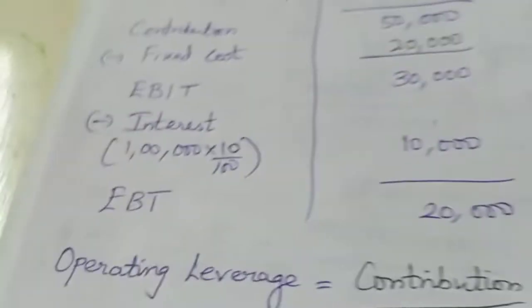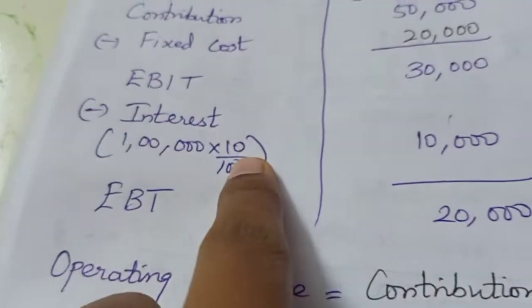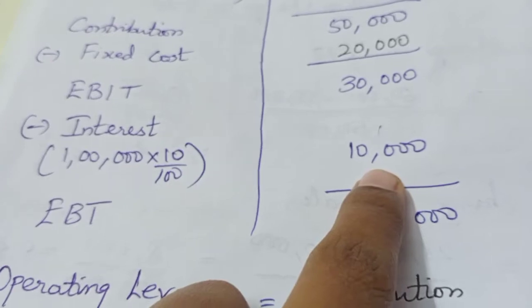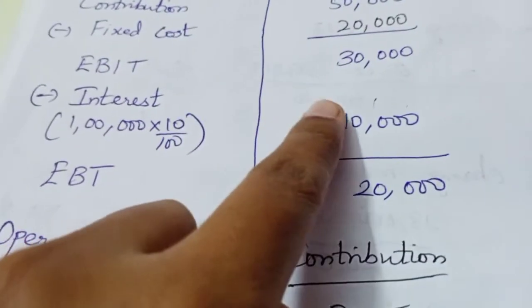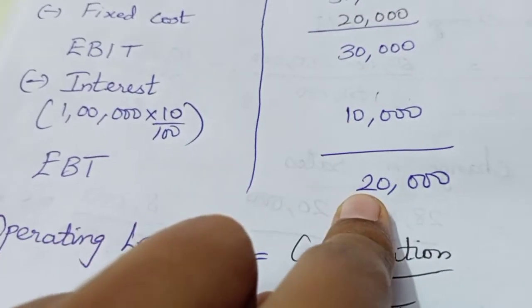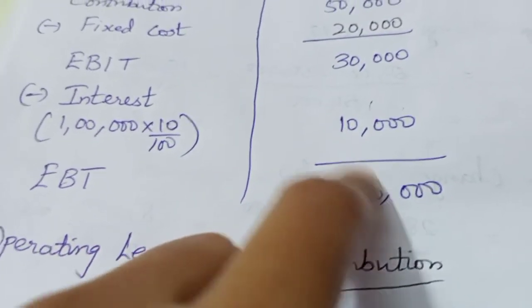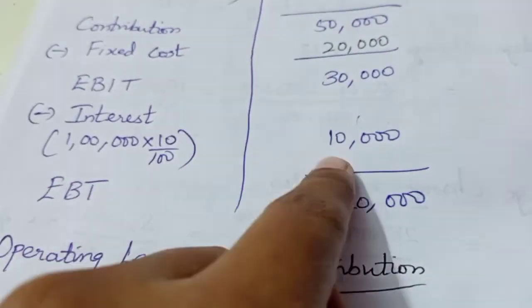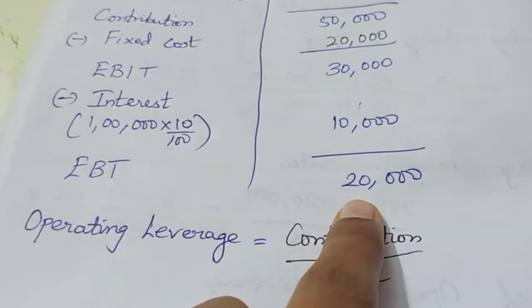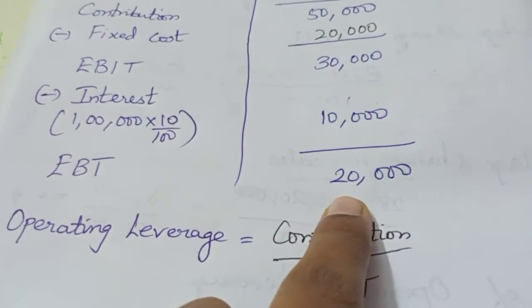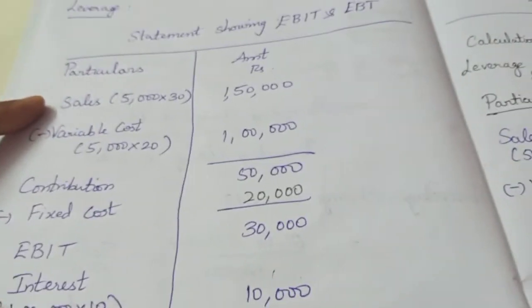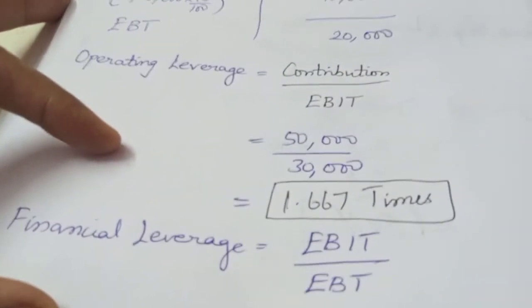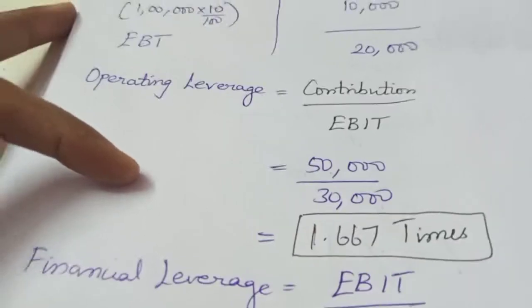Interest is calculated as 1,000,000 into 10 by 100, which equals 10,000. So EBIT minus Interest gives EBT: 30,000 minus 10,000 equals 20,000 EBT. If we prepare this statement, it will be easy to calculate.